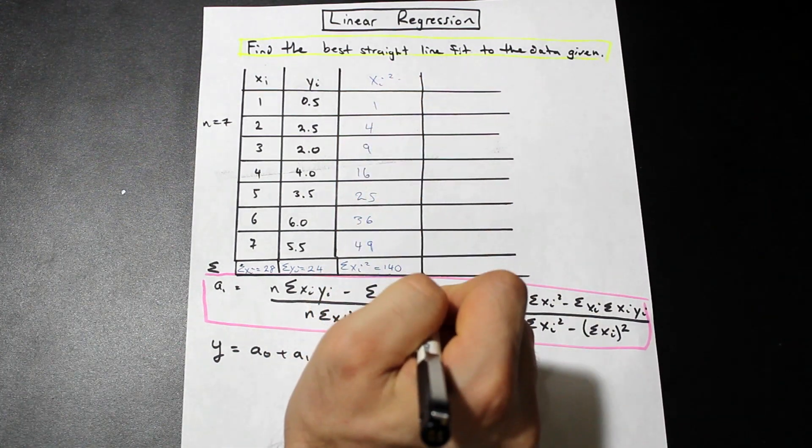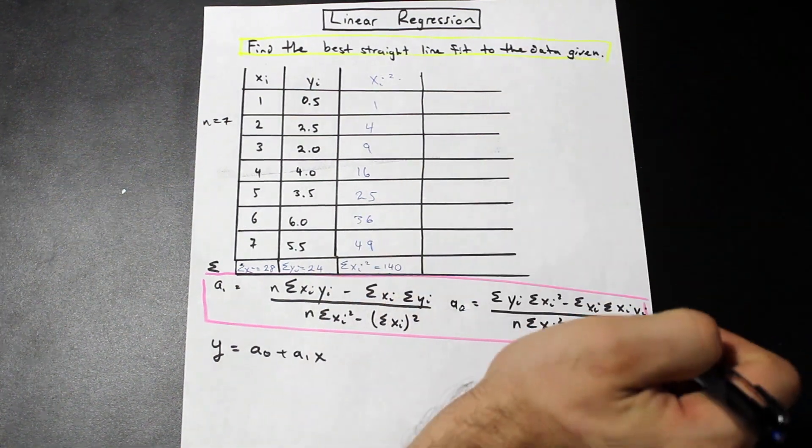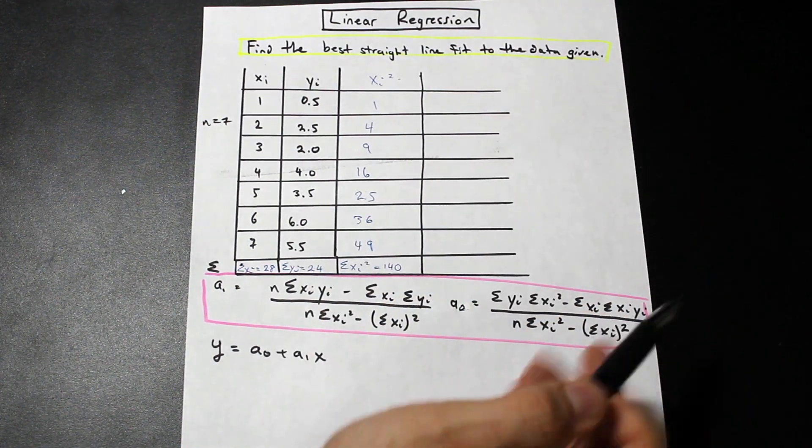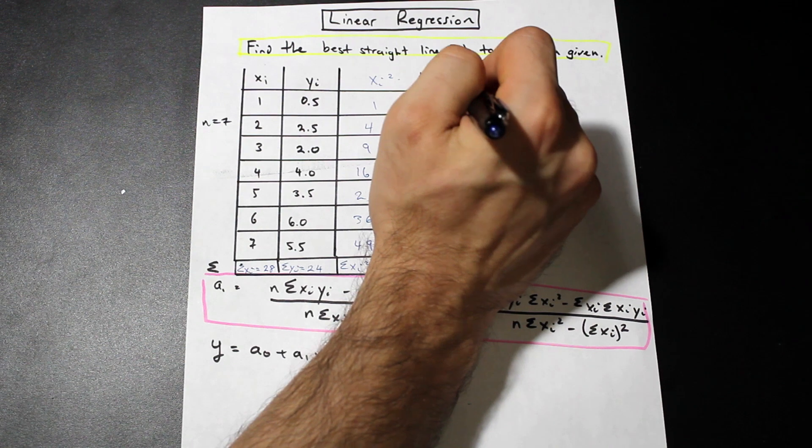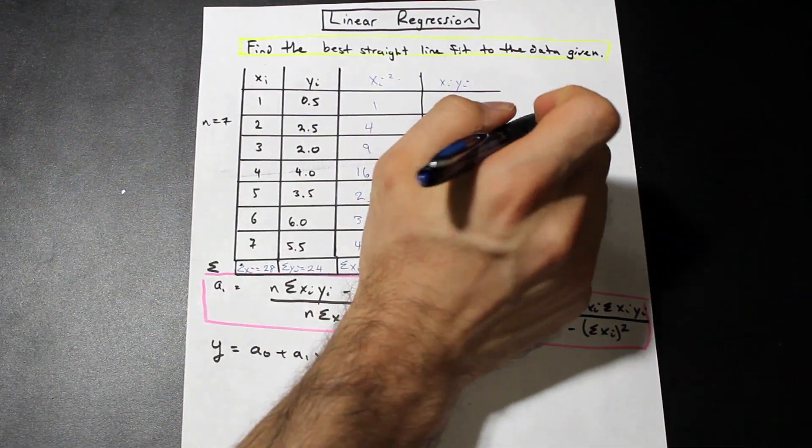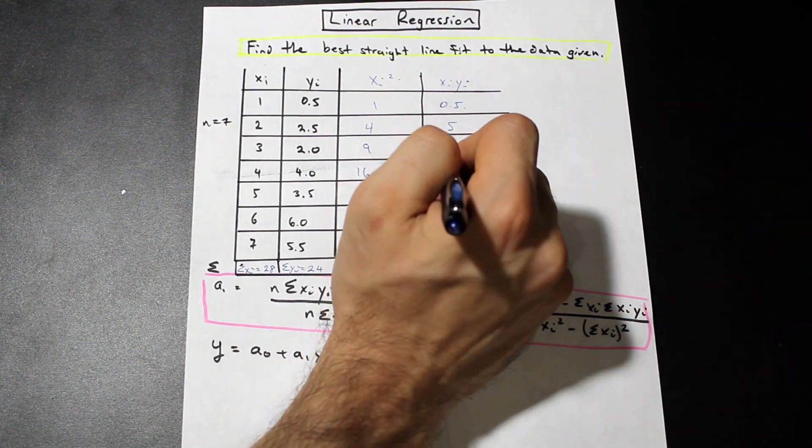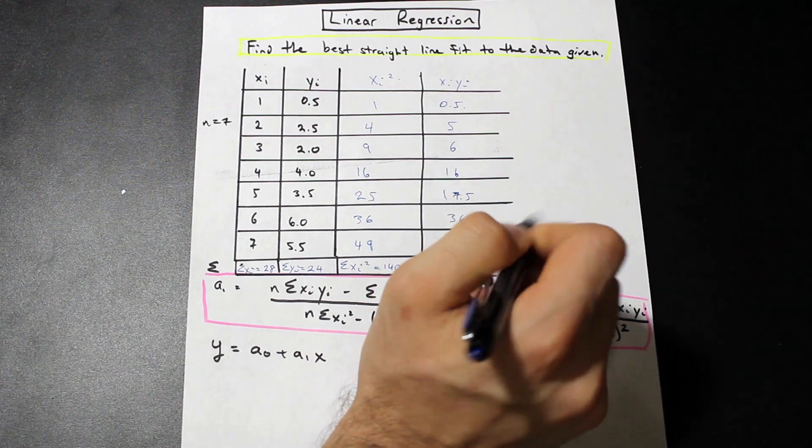What else can we add to our table to make our lives just a little bit easier here? We do need xi yi here, as we can see, and we're going to need the summation of that. So let's go ahead and multiply xi and yi together for all of these, and then we can just summate them all.